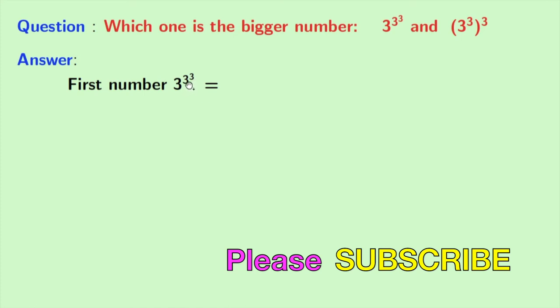Now, look that in the power we have 3^3, that is 27. So, we have 3^27 as our first number.